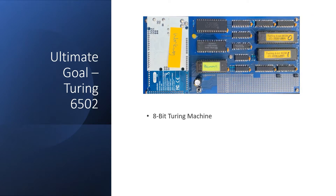Here is our ultimate goal, the Turing 6502. This is an 8-bit Turing machine, and it runs a 6502 emulator. It has an Arduino Mega interface, like the current build, and it runs Apple II software.